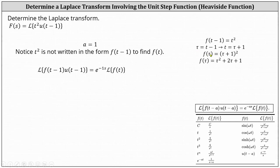Next, we determine f of tau. To determine f of tau, we replace t in f of the quantity t minus one with tau plus one, which gives us a square of tau plus one. Multiplying this out, we have f of tau equals tau squared plus two tau plus one. This is the function we need for the right side of the shifting equation.